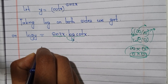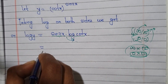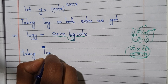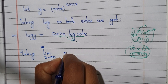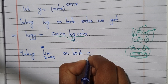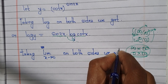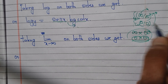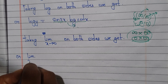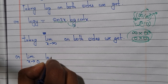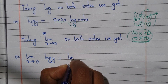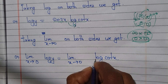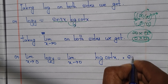We are going to take the limit as x tends to 0 on both sides. So limit x tends to 0 of log y is equal to limit x tends to 0 of log(cot x)^(sin x).